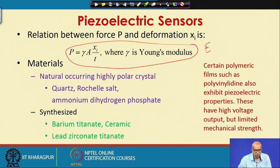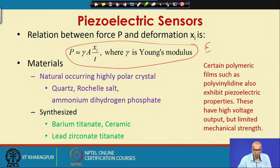Materials that show piezoelectric effects are both naturally occurring and synthesized. Naturally occurring highly polar crystals such as quartz, Rochelle salt, and ammonium dihydrogen phosphate show piezoelectric properties. Synthesized materials such as barium titanate, ceramic, and lead zirconate titanate also show piezoelectric properties. Certain polymeric films such as polyvinylidene also exhibit piezoelectric properties.